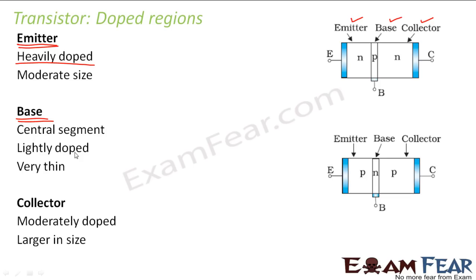The base is the central segment lying between the emitter and collector. It is lightly doped because it is the intermediate region and not the source of current carriers — that role belongs to the emitter, which is heavily doped. The base is also very thin. Why it must be very thin will be discussed when we cover the working of the transistor.